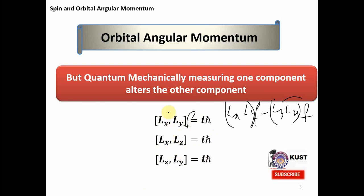Independently, they can be measured accurately. For example, I can measure LX with 100% accuracy and compromise on LY, or measure LY with 100% accuracy and compromise on LX. But measuring both simultaneously with 100% accuracy is not possible. This is not due to experimental limitations but is the fundamental law of quantum mechanics — the uncertainty principle — because of which all three components LX, LY, and LZ are uncertain together.